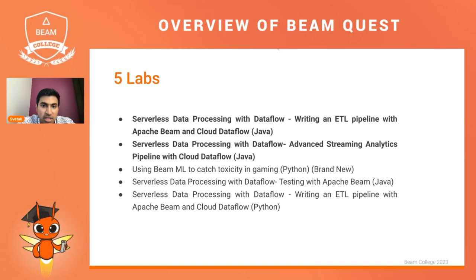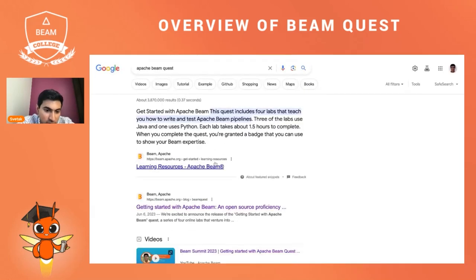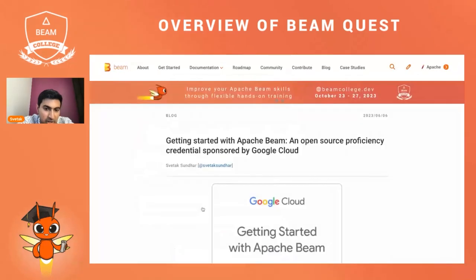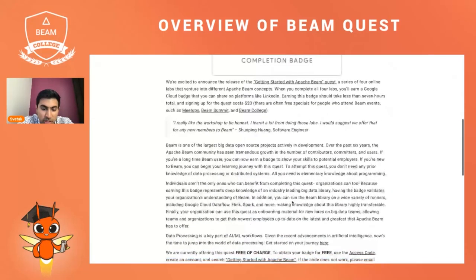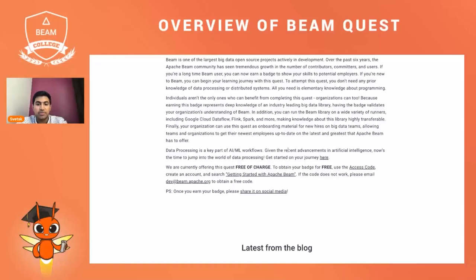The first thing you should do is Google 'Apache Beam Quest' on Google Search. You'll see a blog post on Beam that talks about this open source credential with completion badge. If you scroll to the bottom, you can see that you can obtain your badge for free and you can use the provided access code — just click on it.